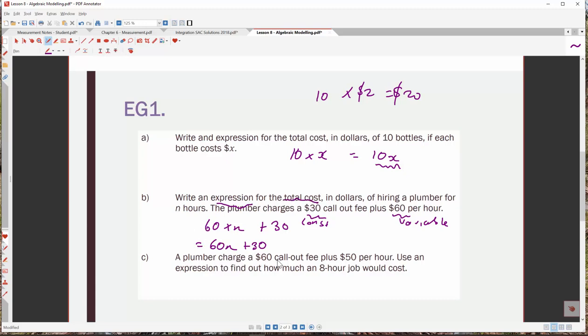A plumber charges a $60 call-out fee plus $50 per hour. Use an expression to find how much an eight-hour job would cost. So you can do it actually by just going eight lots of 50 plus 60, but let's write our expression and then do this via substitution. So it's a $60 call-out fee this time, not $30. This plumber is obviously a boutique plumber. And so $60 call-out fee, 50 bucks an hour, although cheaper per hour, interesting. Anyway, all right, so it's going to be 50 lots of n, because that depends on the number of hours worked, plus 60. So our expression is 50n plus 60.